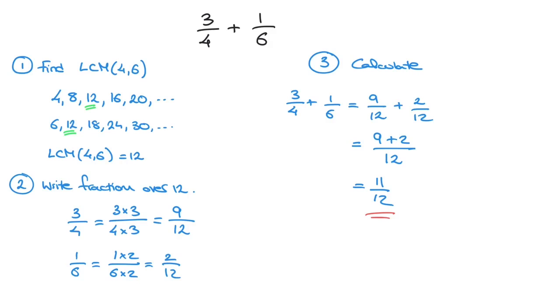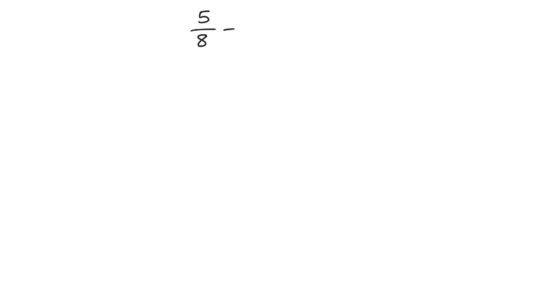We can also use the same method for subtraction with fractions. Let's look at a quick example of that. Let's say we have to calculate 5 over 8 minus 7 over 12. Again, we can do this in three steps. Step 1 is to find the least common multiple of the two denominators — in this case, 8 and 12. So I'll just write: find LCM of 8 and 12.